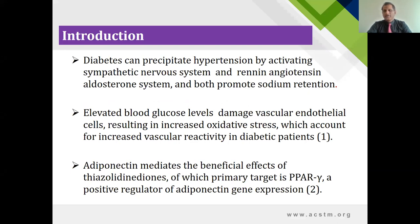Basically, this research encompasses and covers diabetes in experimental animals, which are the Wistar rats. As we know, diabetes can precipitate hypertension by activating the sympathetic nervous system and the RAS — renin-angiotensin system — and both of these systems promote sodium retention within the body. Whereas elevated blood glucose damages the vascular endothelial cells, increasing oxidative stress and ultimately causing vascular reactivity in diabetic individuals.